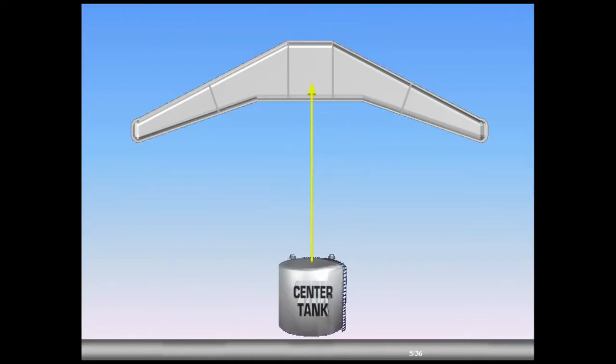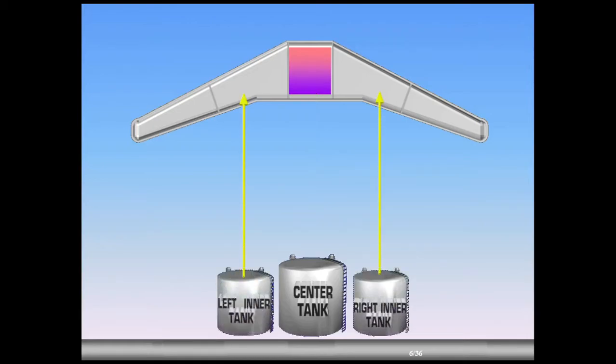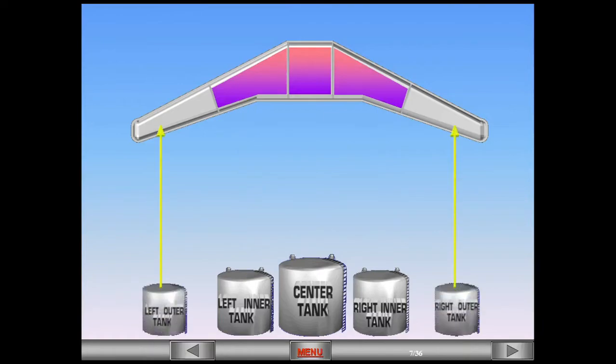The center tank is located in the fuselage. The inner tanks are located in the wings, and the outer tanks are located in the wings.